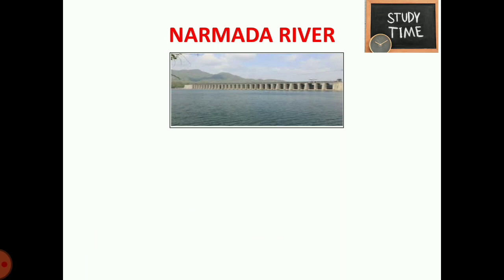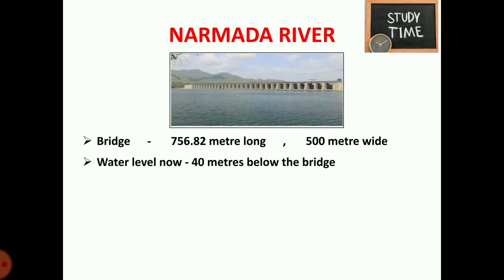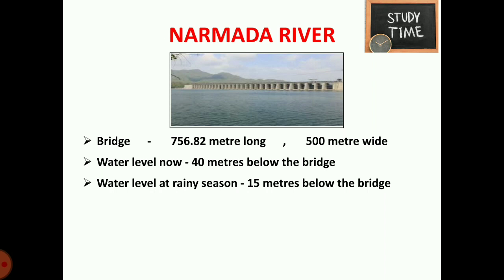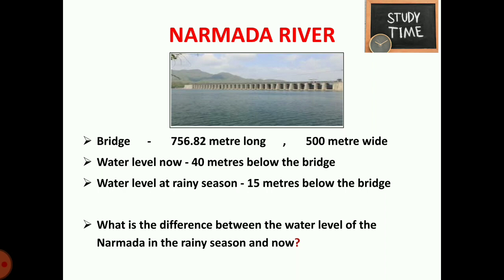While traveling, they crossed the Narmada River. Children started discussing the river's size and water level. The bridge is 756.82 meters long and 500 meters wide. The current water level is 40 meters below the bridge, while during the rainy season it is 15 meters below the bridge. The difference between the two water levels is 40 minus 15, which equals 25 meters.